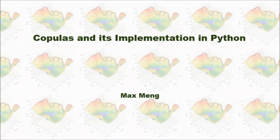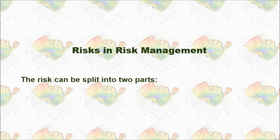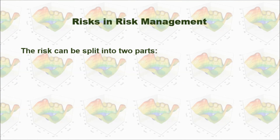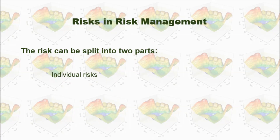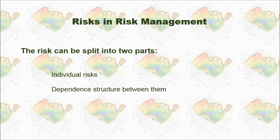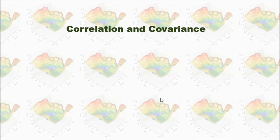This time, I'm going to talk about copulas and their implementation in Python. In risk management, the risk can be split into two parts: individual risks and the dependent structure between them. When we consider the dependent structure between risks, very often we use correlation and covariance.